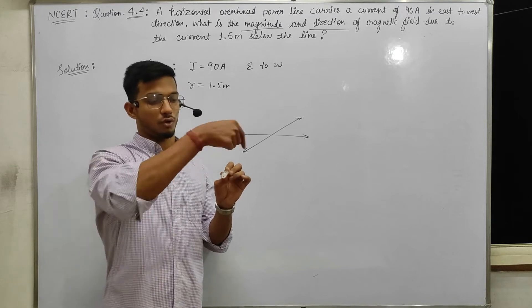From just below the line, 1.5 meter, this wire is just below 1.5 meter. Here I write 1.5 meter. Now you have to take out magnetic field.